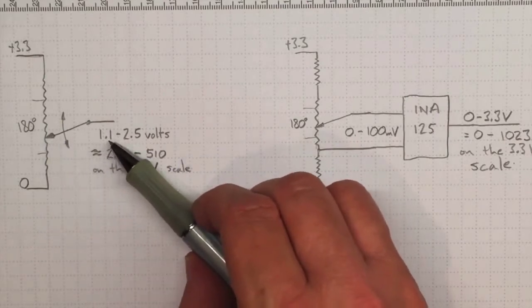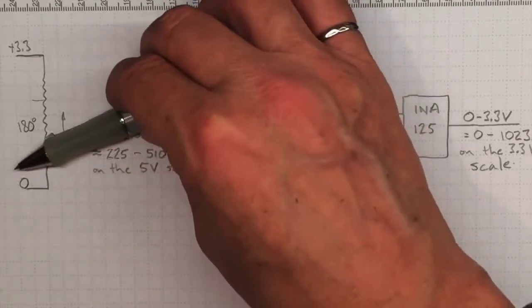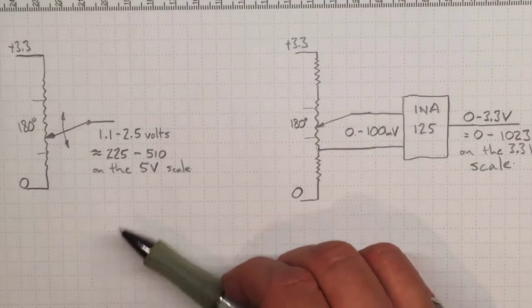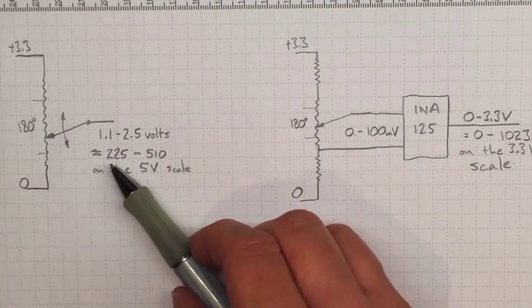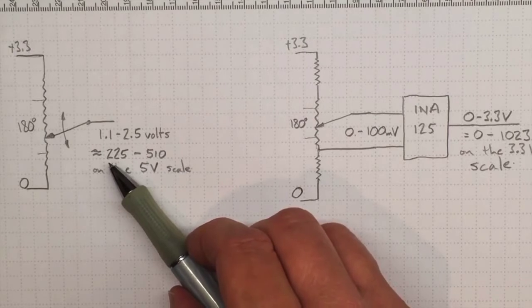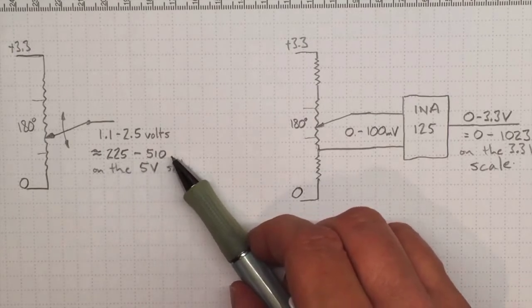I tried that and I got about 1.1 to 2.5 volts out when I did that. And if I measured that on the 5 volt scale that would give me analog read values between about 225 and about 510.